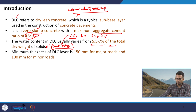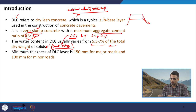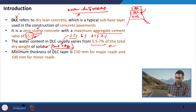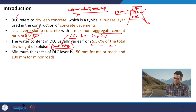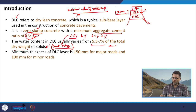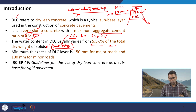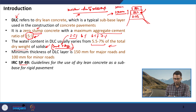DLC is used as a sub base layer in pavement construction. We have the embankment, a granular sub base for drainage, then the DLC mix, and above this we place our PQC. The minimum thickness of DLC for a major road is 150 mm. For a minor road or low volume road with a stabilized cemented layer, the thickness is 100 mm.